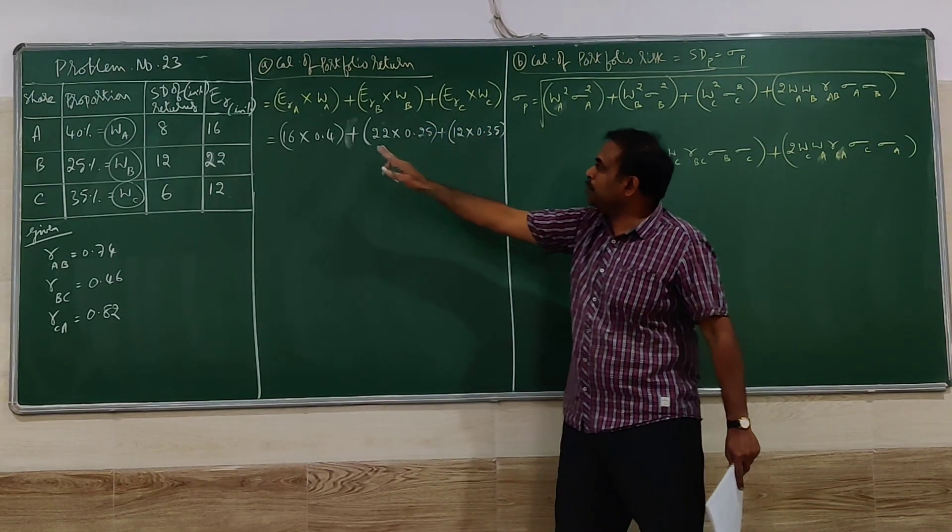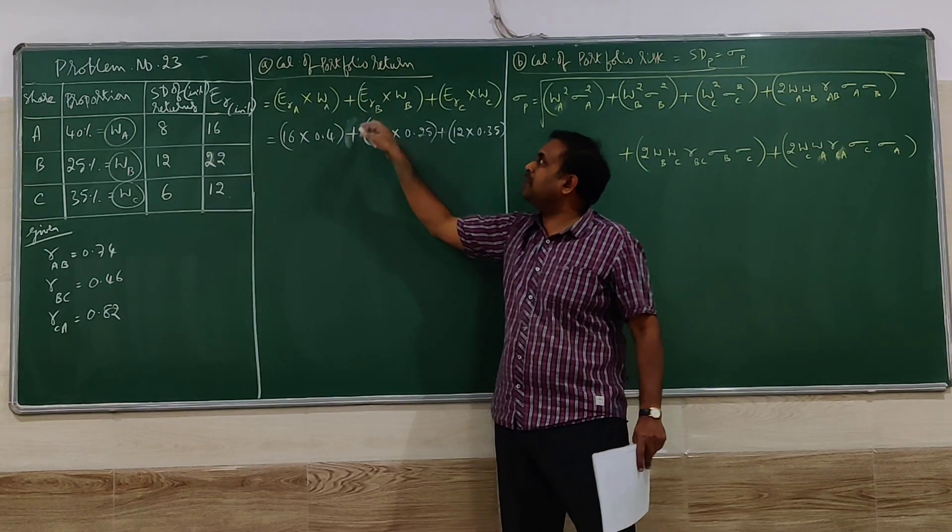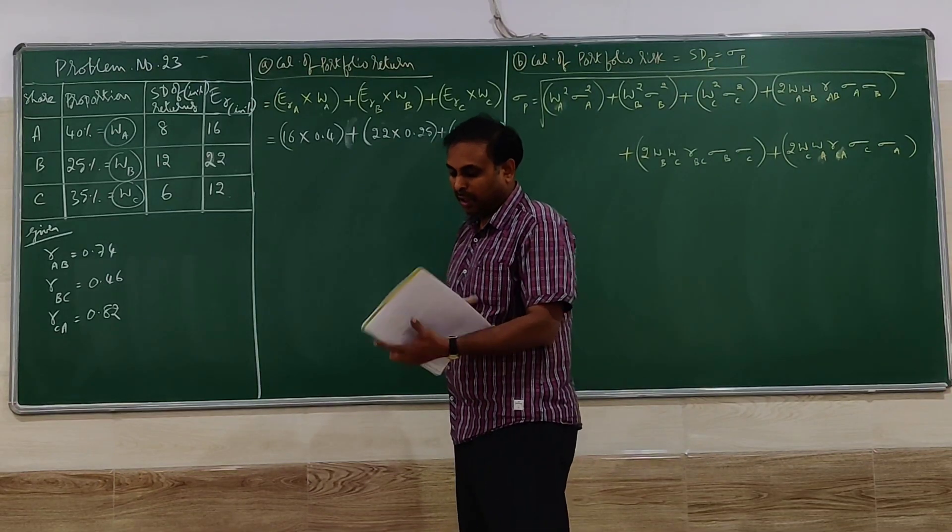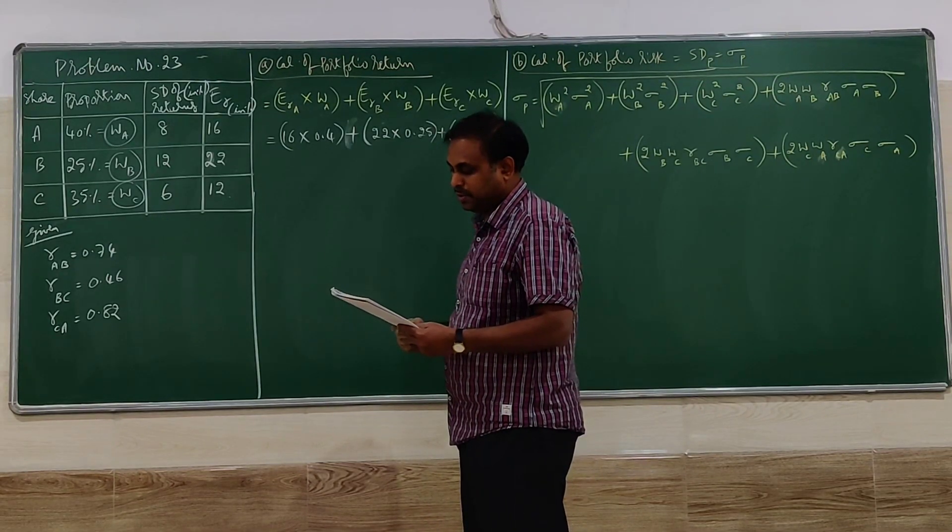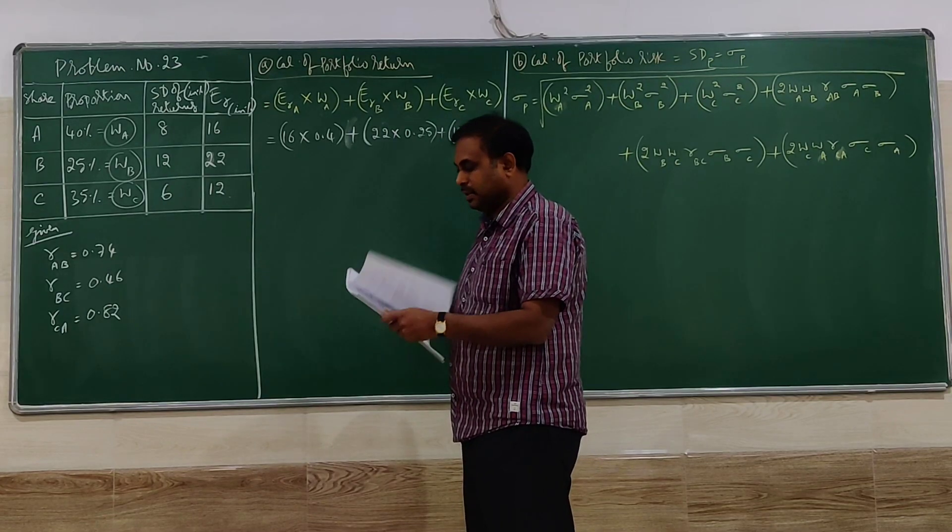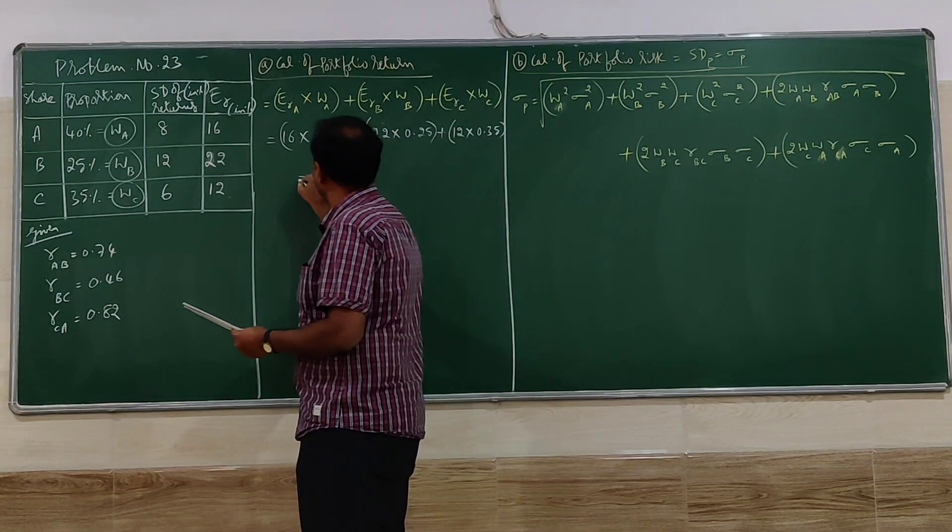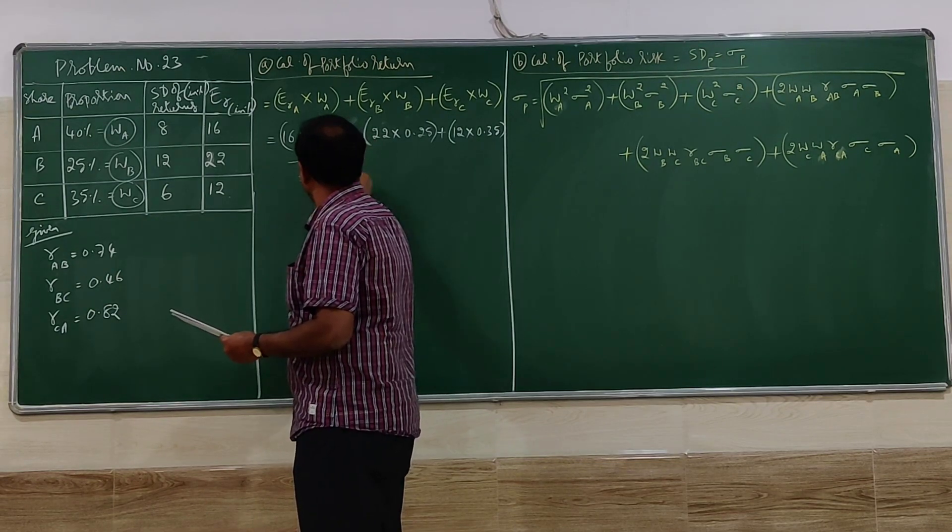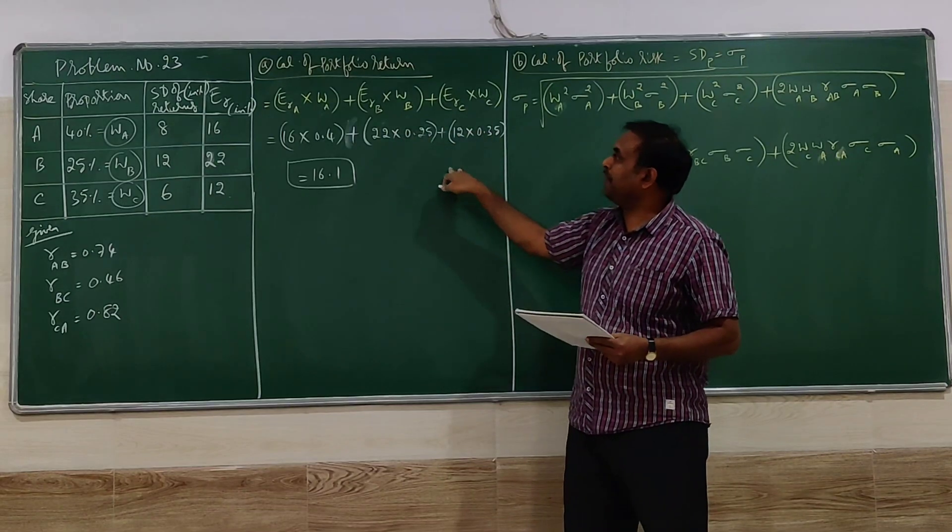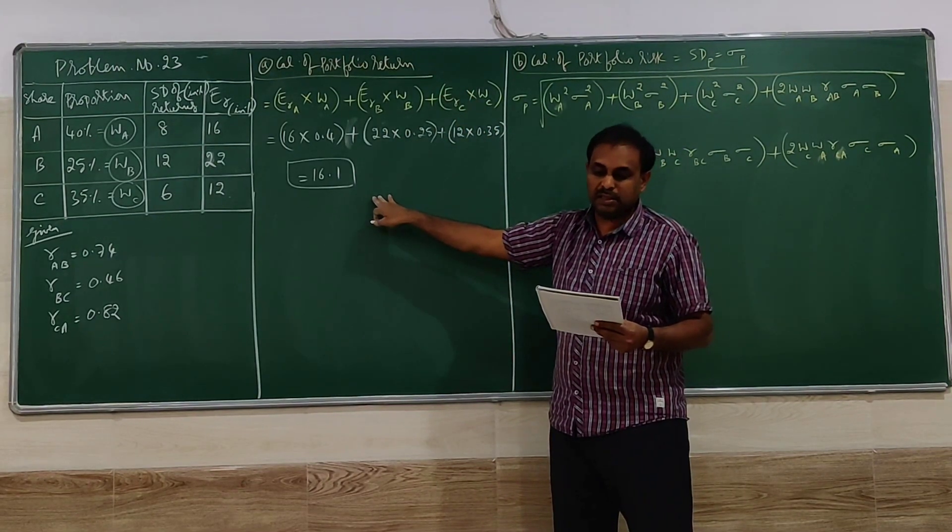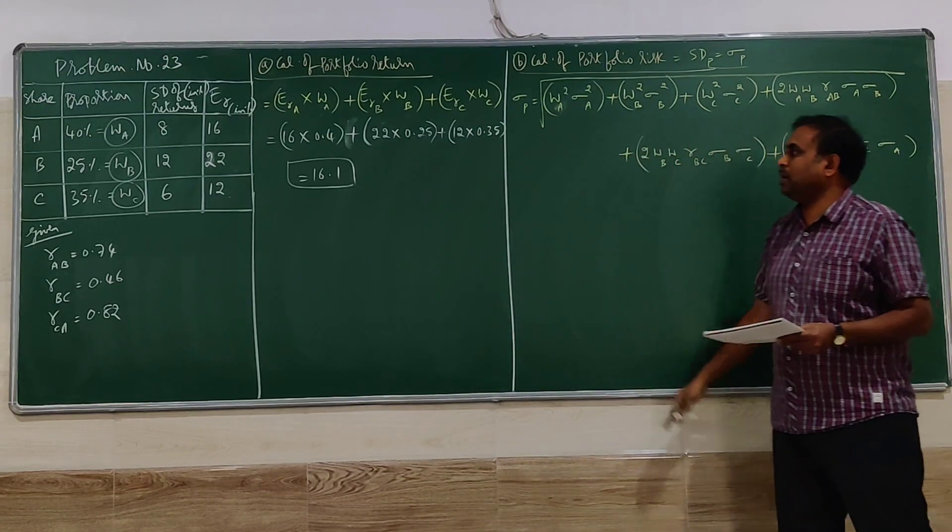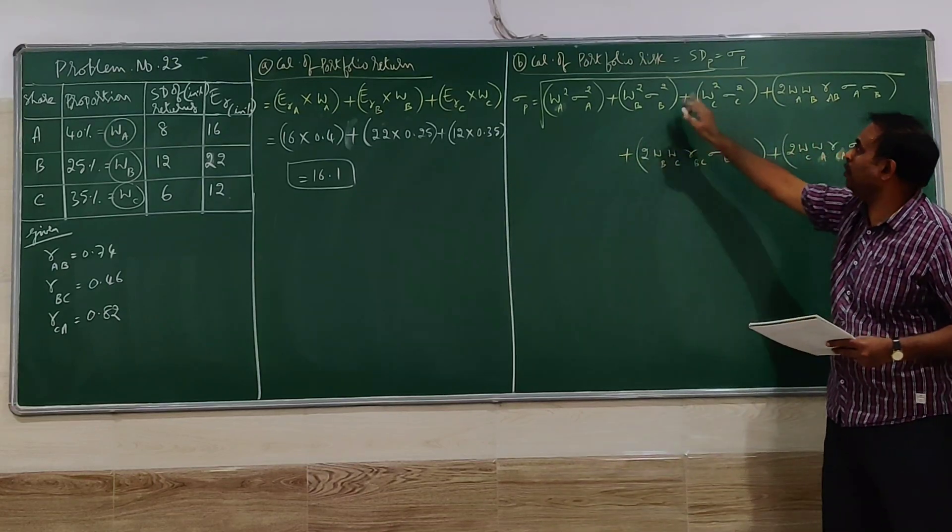So when you do this combination of work, you will get the value of expected return. So we have to go for the simplification of this. Then you will get the final answer as 16.1. So portfolio return is 16.1. Next, I will move on to the next one. You can go for simplification and check it out.